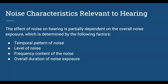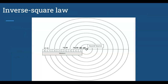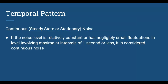The effect of noise on hearing has several factors: the temporal pattern of the noise, the level of the noise, the frequency content of the noise, and the overall duration. There's also the inverse square law: as you double the distance from a source, the sound intensity is reduced by 6 dB. This is important when potentially moving an employee or applying engineering controls to reduce noise exposure.